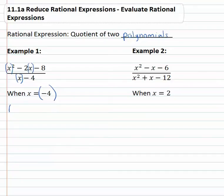So instead of x squared, again in parenthesis when we make a substitution, is negative 4 squared minus 2x, 2 times negative 4 minus 8, all over x, which is negative 4 minus 4.